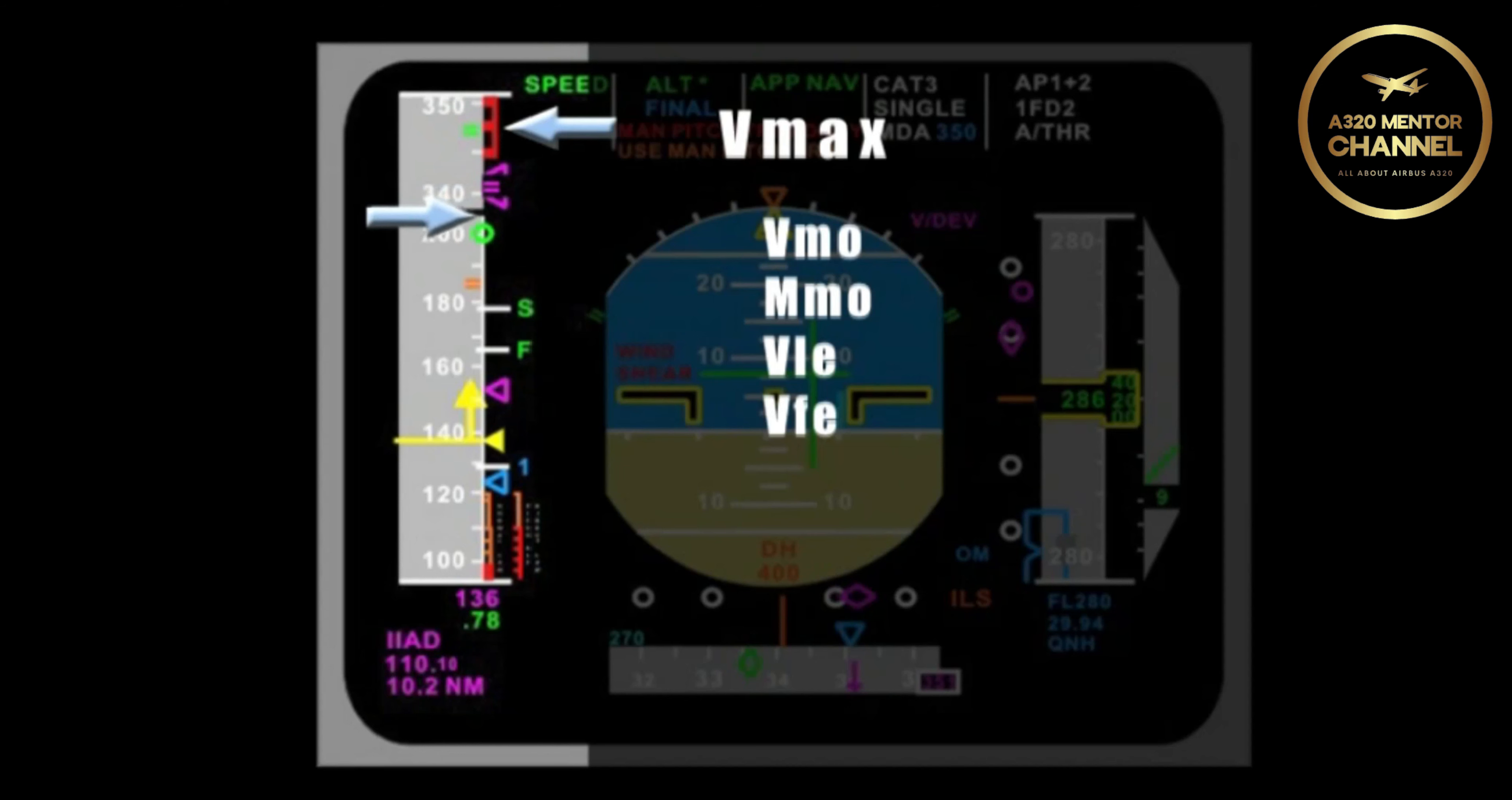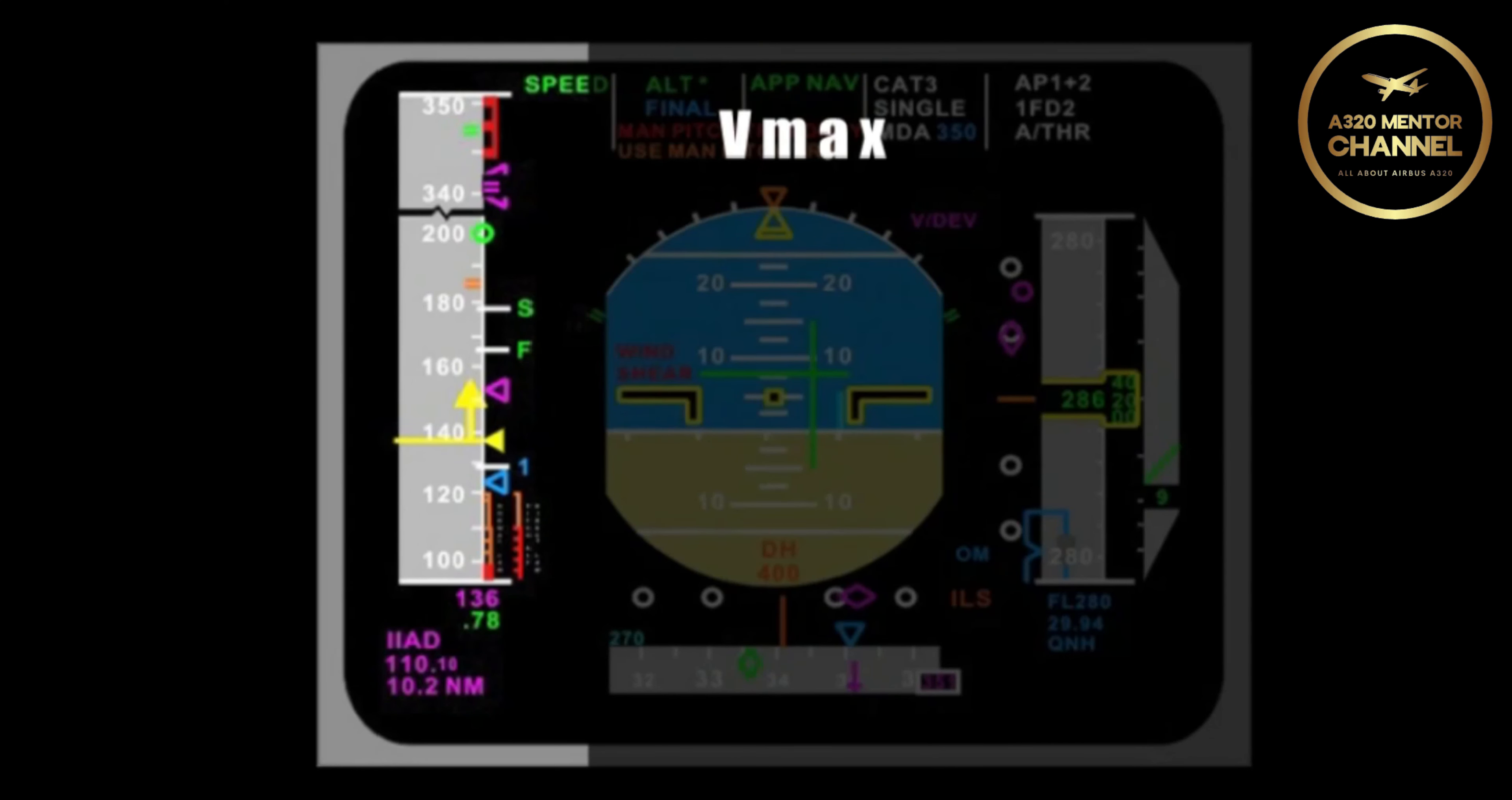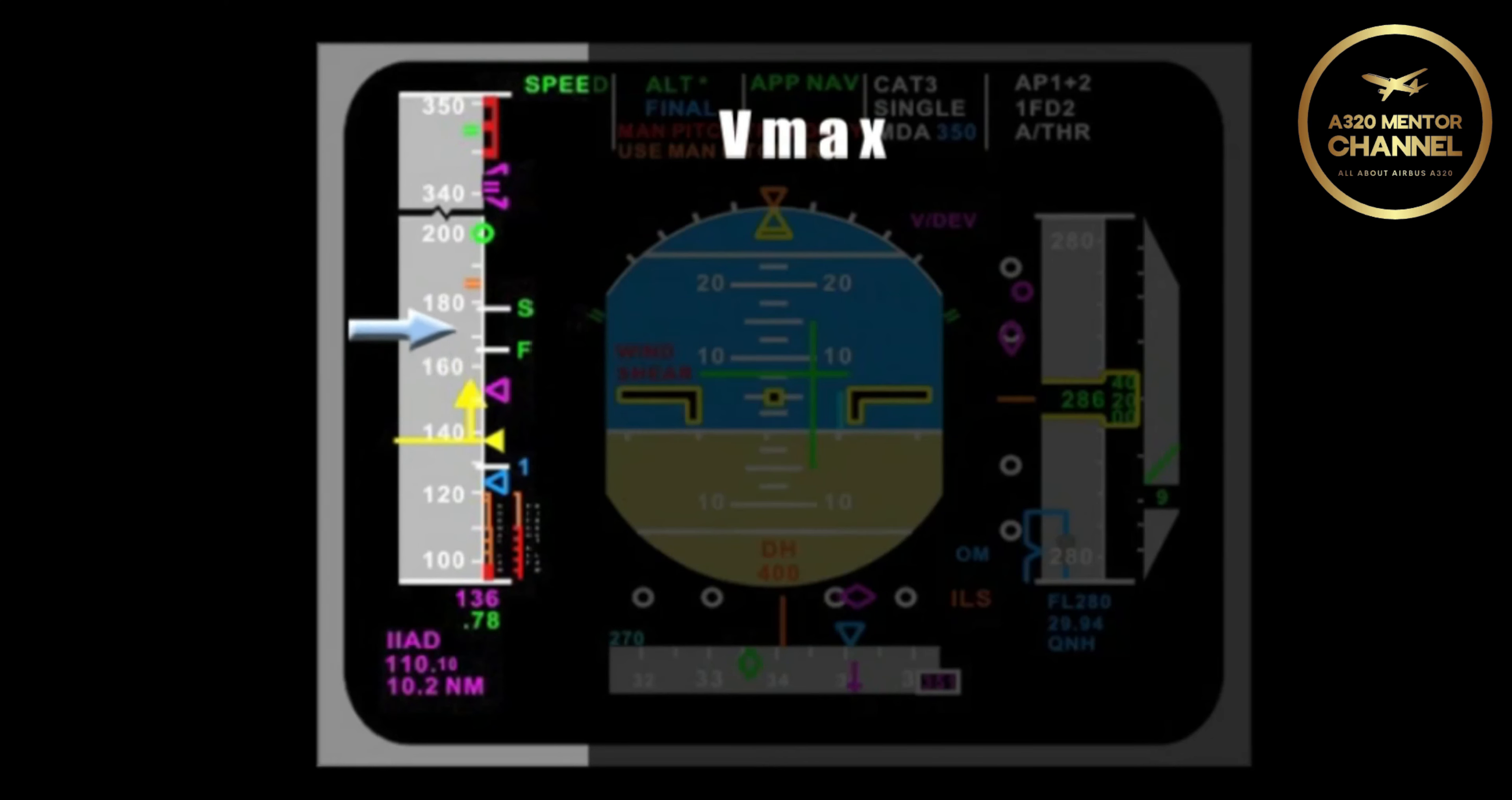VMAX will move to reflect the lowest limitation, but it will not show VMO, MMO for alternate law. What occurs at VMAX? If we accelerate past VMAX, we will get a continuous repetitive chime. Also, an ECAM message will be displayed.